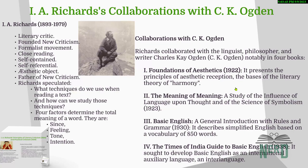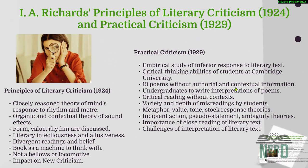That was all about I.A. Richards' collaboration with C.K. Ogden. Now let's move quickly to Principles of Literary Criticism and Practical Criticism. Principles of Literary Criticism is one of his major works, published around 1925. In this book, Richards goes deep into how our minds respond to the rhythm and meter of poetry — think of it as a guide to understanding the musicality of literature.